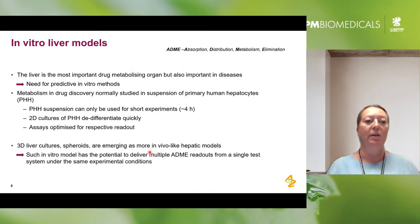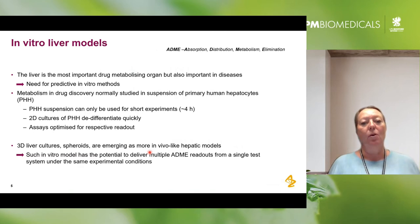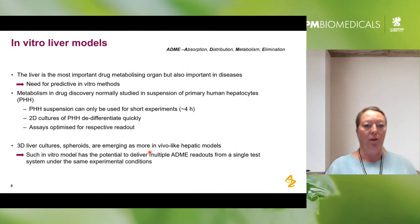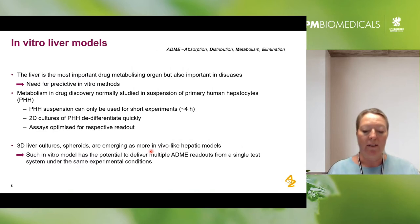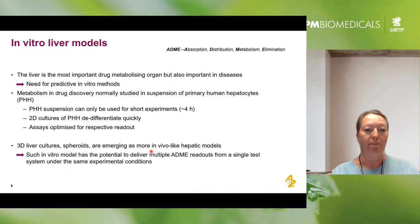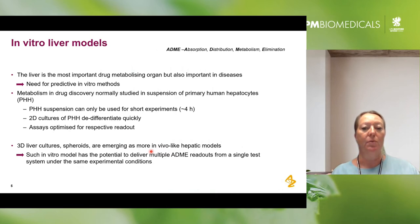PHH — primary human hepatocytes — if we have them in suspension, they can only be used for short-term experiments, about four hours. We can also plate them in 2D cultures, but we know that they de-differentiate quickly in this setting. The assays we use today are optimized for their respective readouts. But here we see the possibility that 3D liver cultures, which we also call spheroids, could be an in vitro model that could deliver multiple ADME readouts from a single test system under the same experimental conditions.